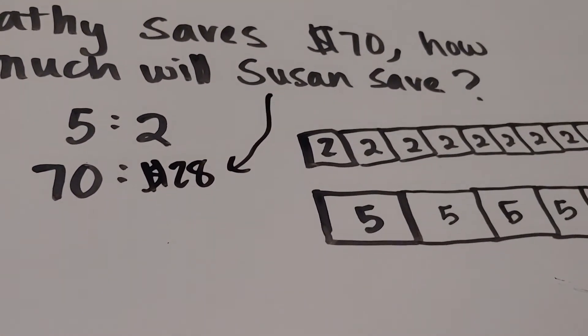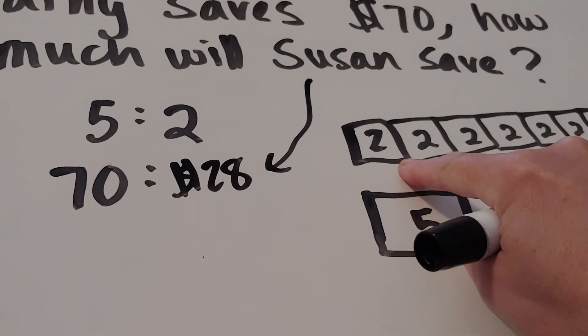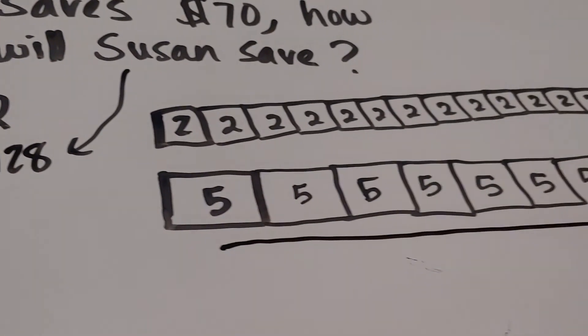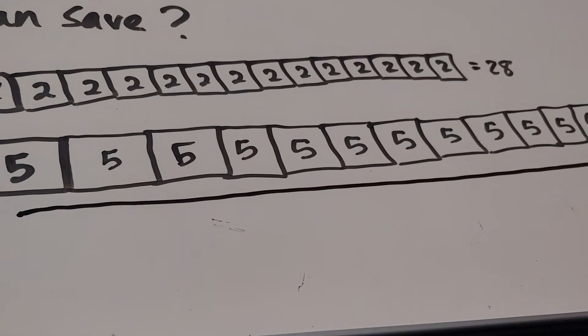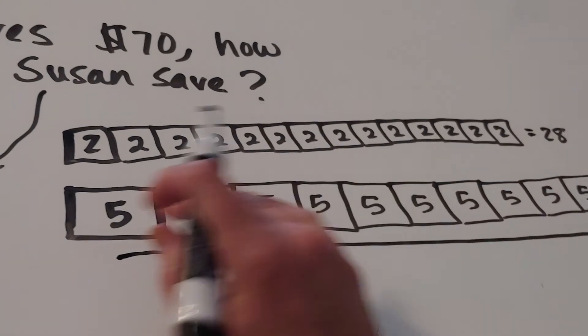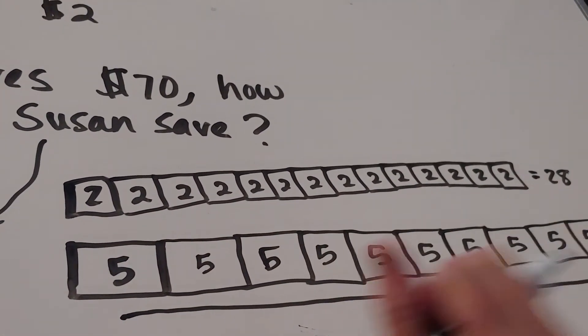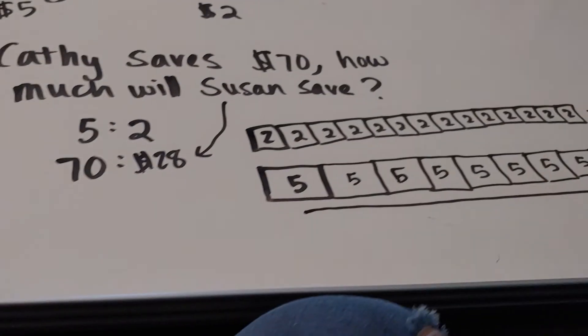So again, how I started was I drew one box of five, one box of two, and then I took this five and blew it all the way up, multiples of five. I needed 14 of them to get to 70. And however many boxes I draw here, I have to draw the same number of boxes here; they just happen to have twos in them instead of fives. I hope that helps.